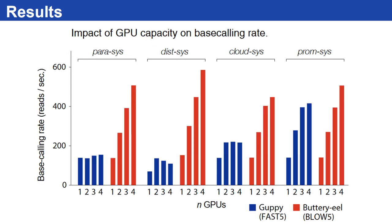Base calling is based on neural networks, hence GPUs are necessary for base calling. In theory, when we use more compute power, the run time should decrease. To test this, we again ran base calling on four different systems, this time varying the number of available GPUs. SLOW5 base calling scaled well with the number of GPUs. In FAST5, it did not scale well.